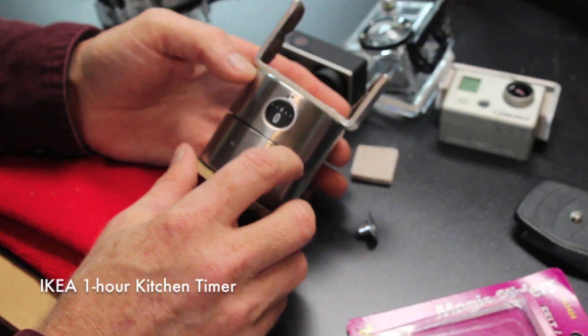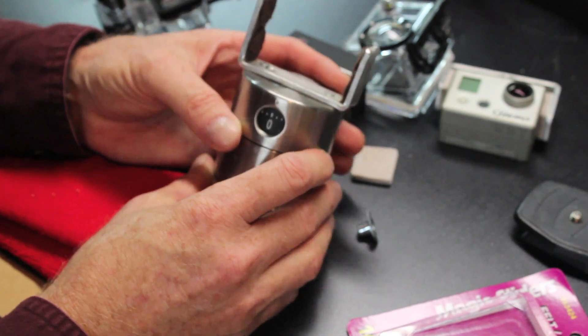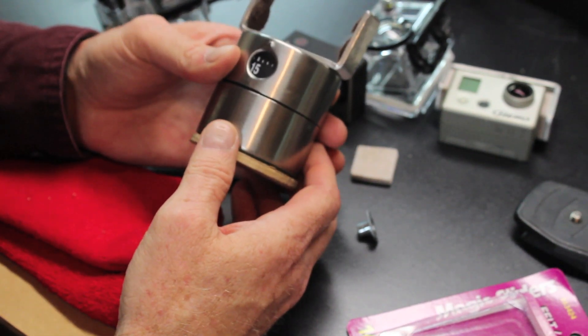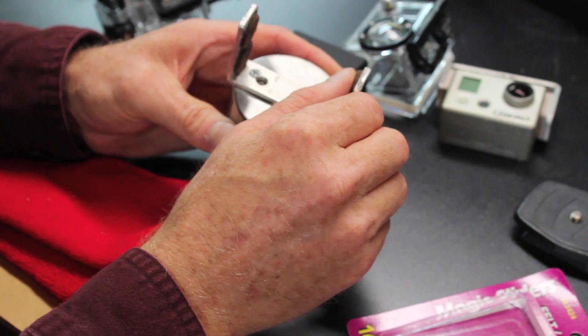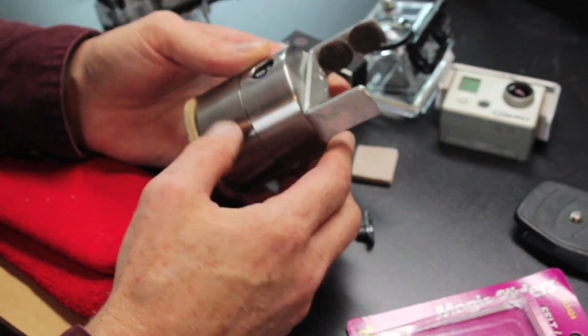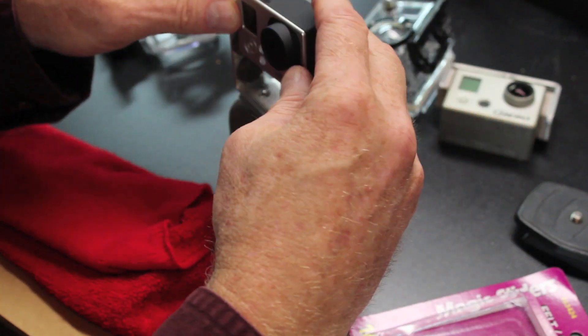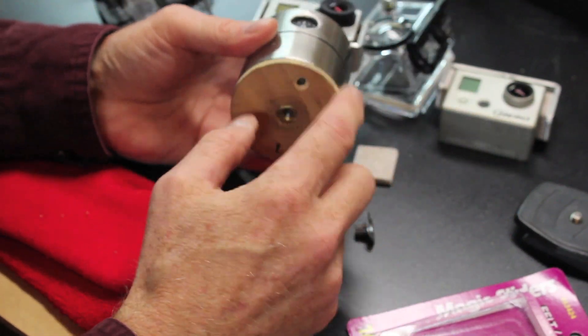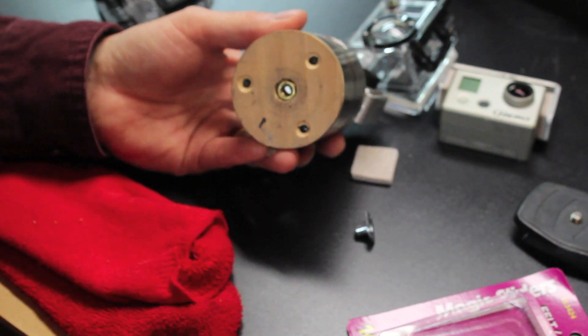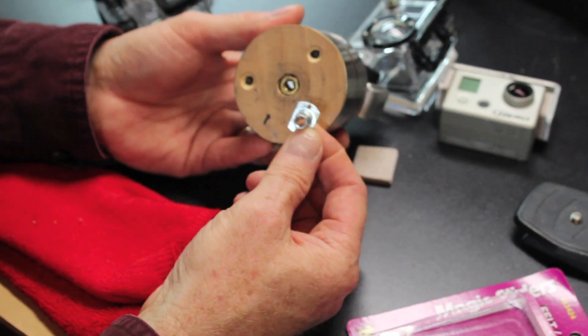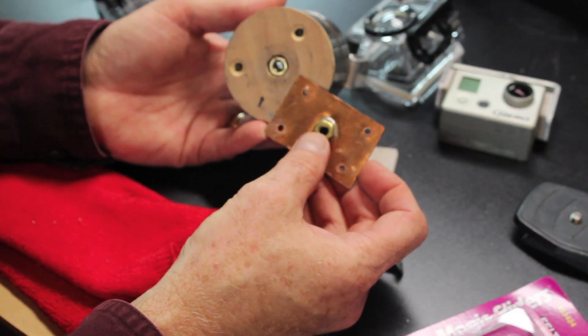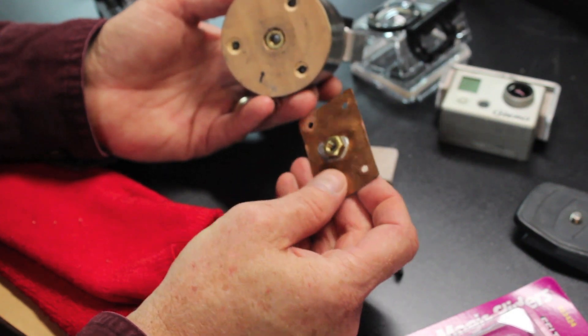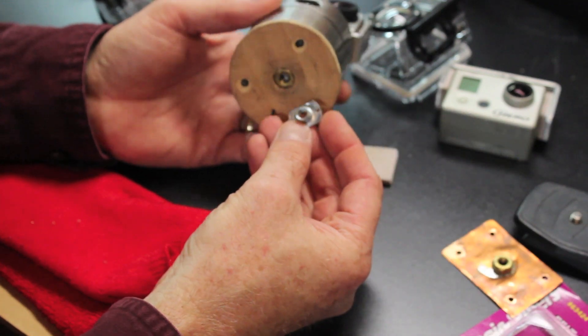The next thing I needed to build was a similar mount on the top of this IKEA egg timer. This is a cylindrically shaped timer, and it turns a full revolution in an hour. So it's one revolution per hour. I screwed this into the top, and then put these padded felt pads on the inside so that it'll hold the GoPro.